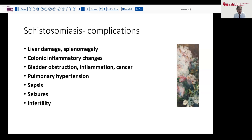In terms of complications associated with schistosomiasis: those involving the liver vessels can develop liver damage and splenomegaly. We've seen colonic changes, bladder obstruction, inflammatory disease, as well as bladder cancers. If the pulmonary vessels are involved, you can develop pulmonary hypertension, and because these evoke an inflammatory response, they can produce a septic-like response. If there's embolization through a cardiac defect or otherwise, you can end up with seizures, and of course, occasionally infertility as in our patient.